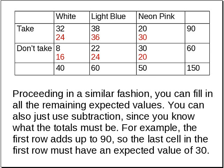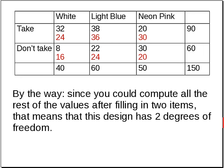Proceeding in this fashion, you can fill in all the remaining expected values. You could also just use subtraction, since you know what the totals have to be. For example, the first row adds up to 90, and we've already calculated 24 plus 36, which comes out to 60. Therefore, we know that the last cell must have a 30 in it. In fact, you could compute all the rest of the values after filling in those first two items, and that means this design has two degrees of freedom.